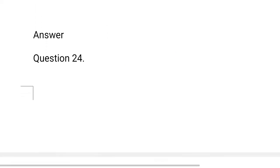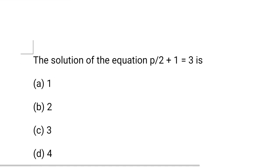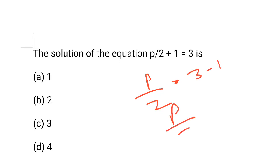Question 24: The solution of the equation p upon 2 plus 1 is equal to 3. So, p upon 2 equals 3 minus 1, that is 2. p upon 2 equals 2. So, p equals 2 into 2, that is 4. d option is correct.